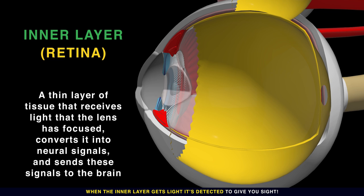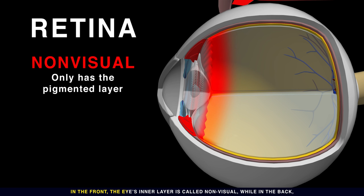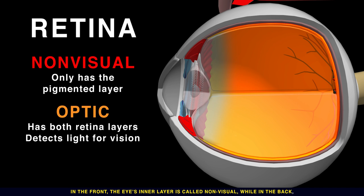The retinas are your eyeball sensors. Each retina is composed of two layers: the neural one for seeing, the pigmented for maintaining. In the front, the eye's inner layer is called non-visual, while in the back, it's called the retina's optic part.